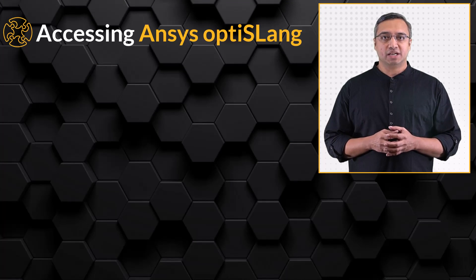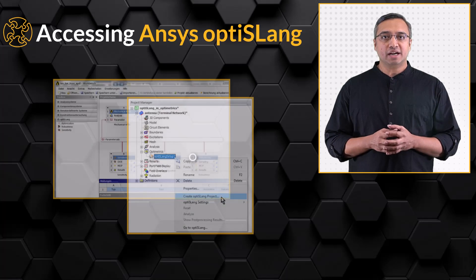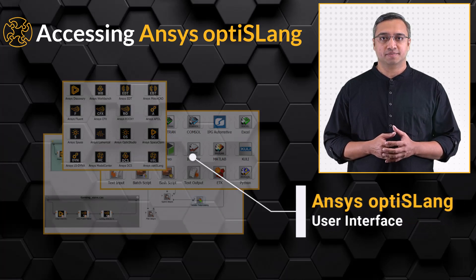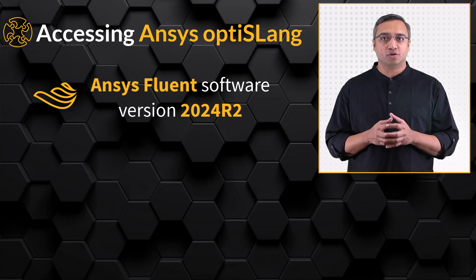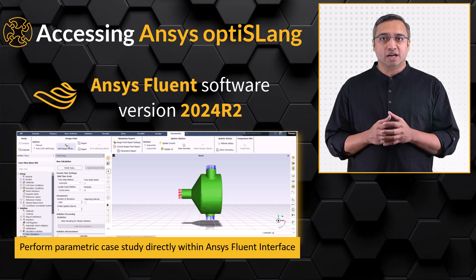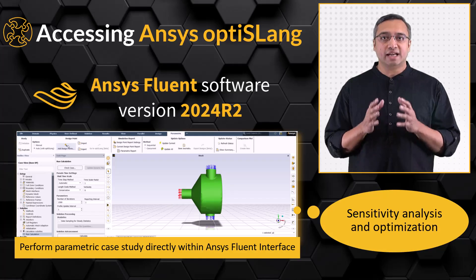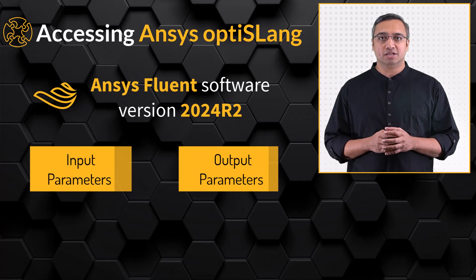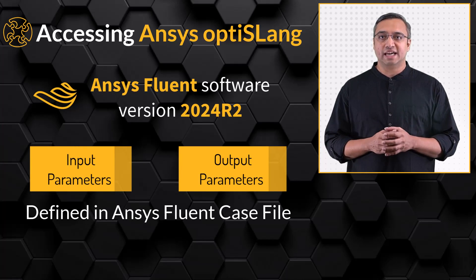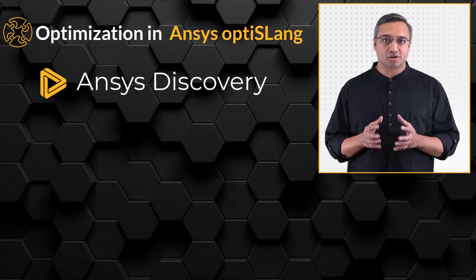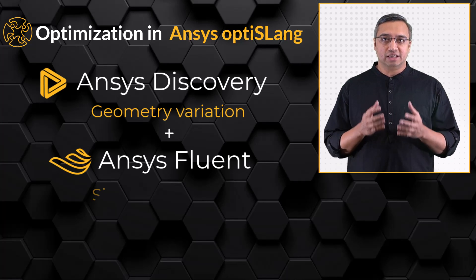We will now briefly discuss the procedure for this analysis. ANSYS OptiSlang can be accessed in two ways: it can be embedded in the graphical user interface of various parametric ANSYS platforms, or used from the ANSYS OptiSlang user interface. Starting from ANSYS Fluent version 2024 R2 and onwards, we have the ability to directly access ANSYS OptiSlang algorithms, allowing us to conduct sensitivity analysis and optimization within the ANSYS Fluent interface. However, it is important to note that all necessary input and output parameters must be defined within the ANSYS Fluent case file. In this course, we will use the ANSYS OptiSlang application and integrate ANSYS Discovery for geometry variation and ANSYS Fluent in the ANSYS OptiSlang user interface.